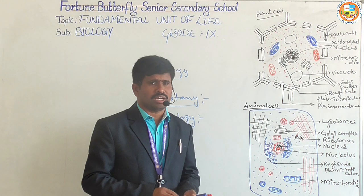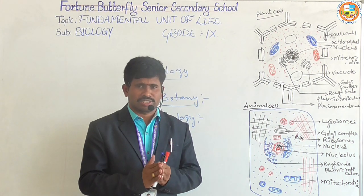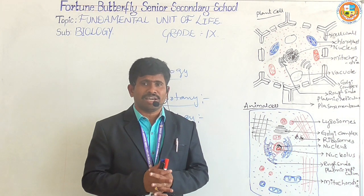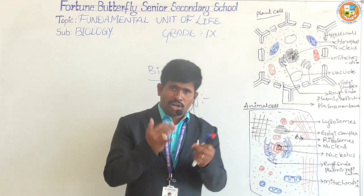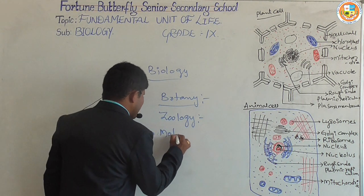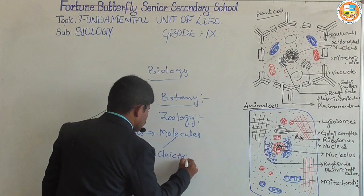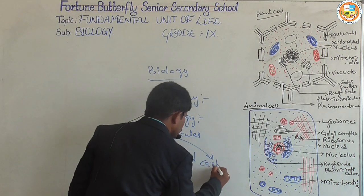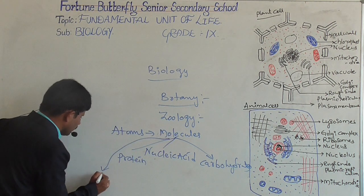How are organisms formed? There are two kinds: living things and non-living things. The body of living and non-living things is made up of tiny units called atoms. Atoms together form molecules — molecules like nucleic acids, proteins, and carbohydrates. These groups of molecules together form protoplasm.